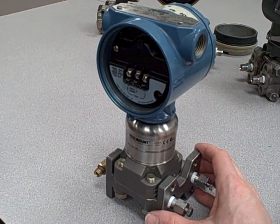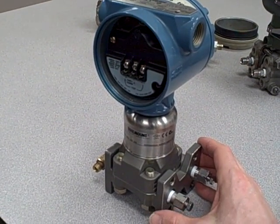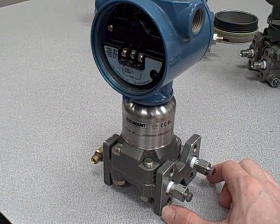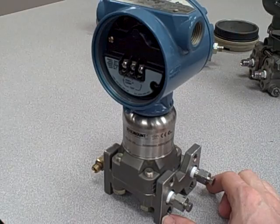This is a Rosemount Model 3051S Super Module Differential Pressure Transmitter. I'm going to use it to demonstrate a very common accessory seen on industrial differential pressure transmitters.